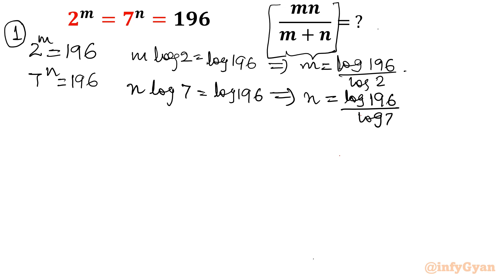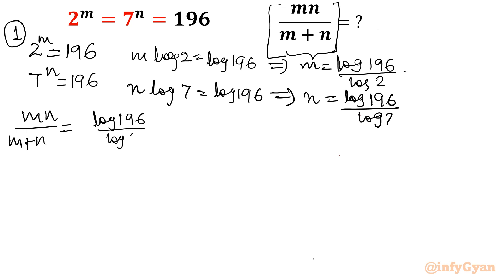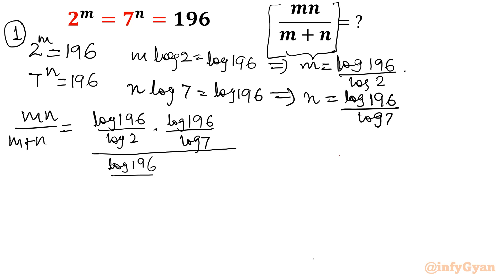Now m and n are known, and we have to substitute their values — but we cannot use the numeric value like log 2 equals 0.3010. We can use the whole expressions log 196 over log 2, and log 196 over log 7, in place of m and n respectively. So let us find the value of the expression. For mn, we write: (log 196 over log 2) times (log 196 over log 7), divided by (log 196 over log 2) plus (log 196 over log 7).